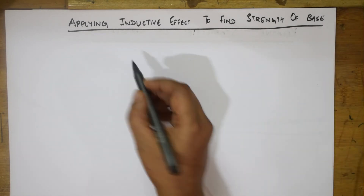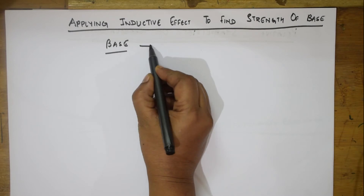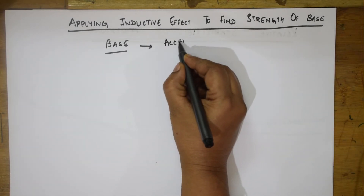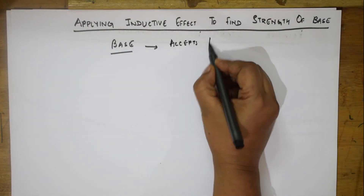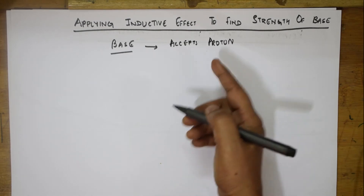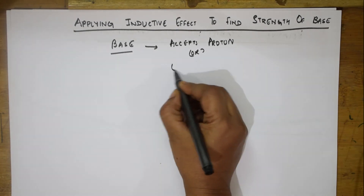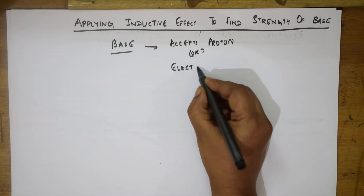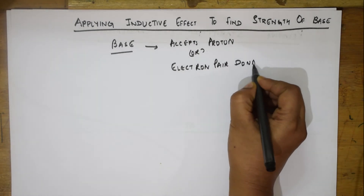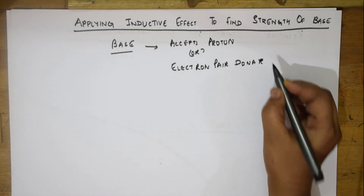Whenever you're given a base, the first important thing that has to come to your mind is: what is a base? A base is something which accepts a proton. You can also write it as an electron pair donor — a base is an electron pair donor. Remember this concept.